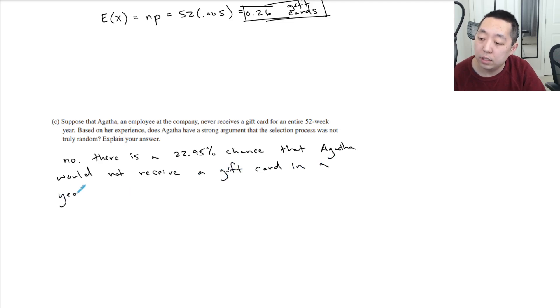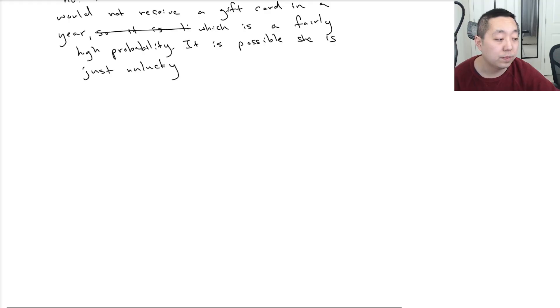There is a 22.95% chance that Agatha would not receive a gift card. So it is likely, which is a fairly high probability. It's almost 1 in 4, 1 in 5 chance. It is possible she is just unlucky. Something to that effect is what I would say. That's it. Thank you.